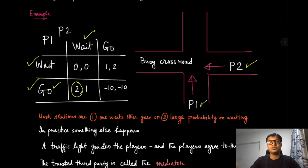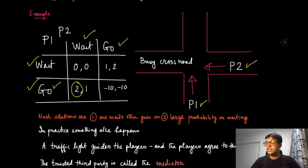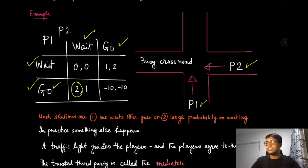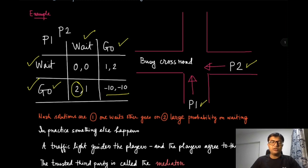Similarly, the opposite happens when the other car is going and this car is waiting. But if both of them go, they will collide into each other and get a very large negative payoff, which they really want to avoid.